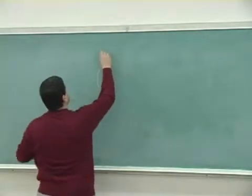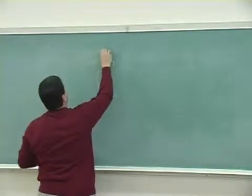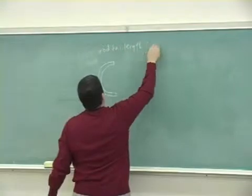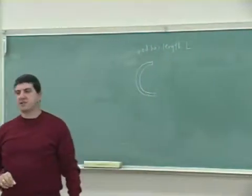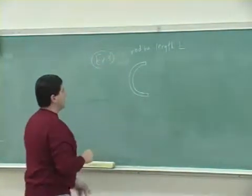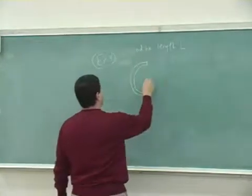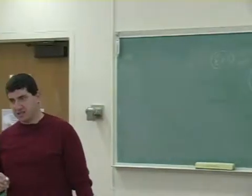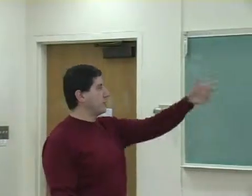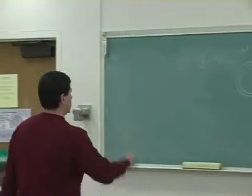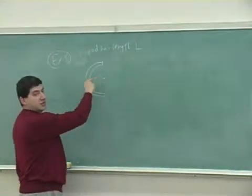Let's say the rod has a length L and is in the shape of a semicircle. This is example three: find the force between that rod and another point charge placed at its center. If you place the charge anywhere besides the center, the problem becomes too hard — just like the linear rod case. The best place to put the charge is the center; other positions make the integral too difficult.